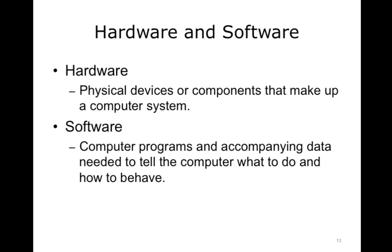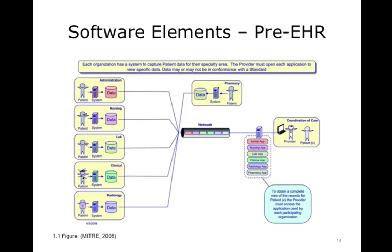Software consists of computer programs and any of their accompanying data, which tell the computer what to do and how to behave. Programmers develop software by writing lines of programming code, which is eventually compiled and stored on some sort of media in an electronic format. This illustration depicts that, prior to centralized EHR system management software, each organization or department maintained its own system and software designed to capture the data required for each specialty area. This meant that multiple databases and patient records existed, and the health care provider was required to open a different client application for each department and compile the data using a manual process. Additionally, data may or may not have been in conformance with a standard.